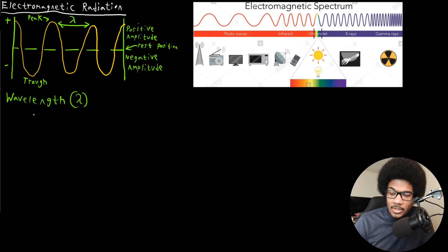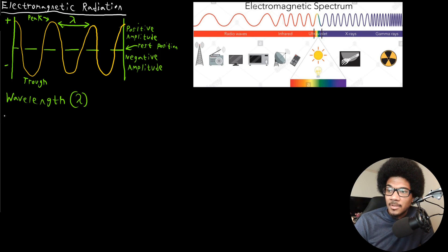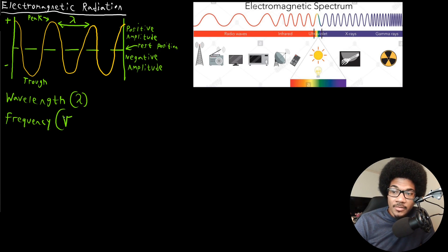The second property we use to model waves is its frequency. We use the Greek letter nu to denote the frequency — I write it like a V with a little tail on it. So: frequency uses the Greek letter nu, and wavelength uses the Greek letter lambda.